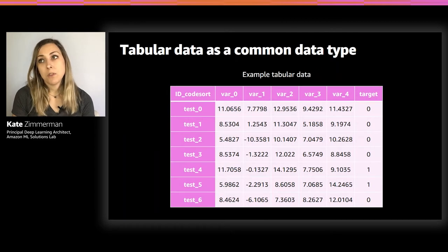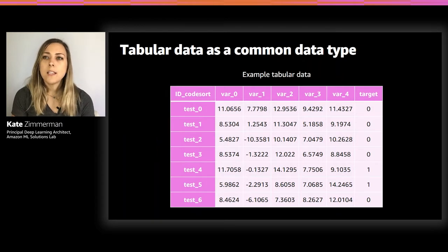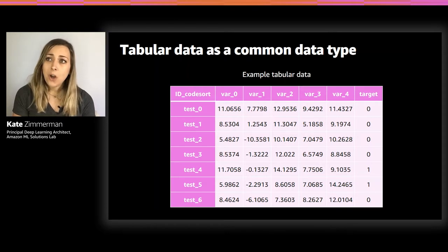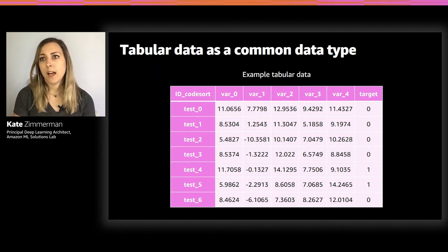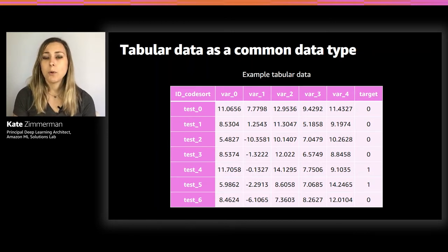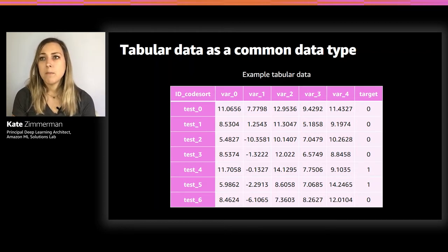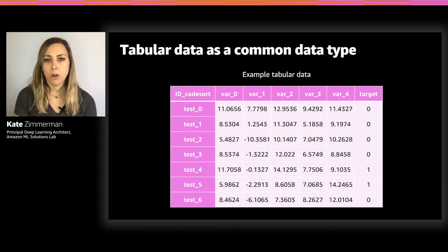What are some common use cases with Autopilot? The first thing you need is tabular data — think CSVs, spreadsheets, relational databases. Tabular data is structured data and one of the most common formats used by businesses. Each column in the data set is referred to as a feature, and the target column is what we're trying to predict. In the example shown, you input features such as var zero through var four and predict a one or zero from that target column.